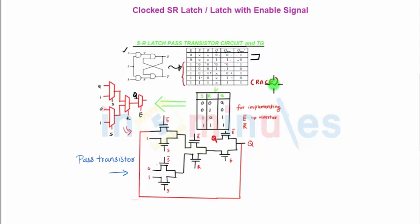So this truth table we have already seen. The simplified version for the same is drawn here without an enabled signal, presuming that enabled signal is high. And now what we want to do is implement this at the pass transistor style.